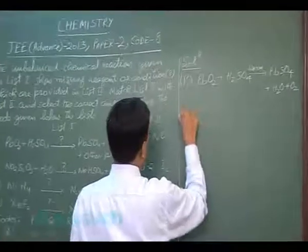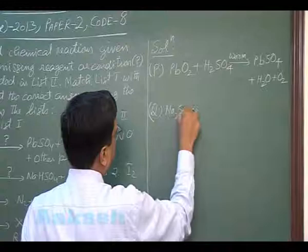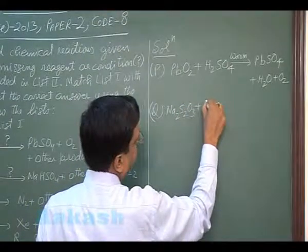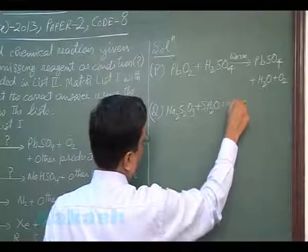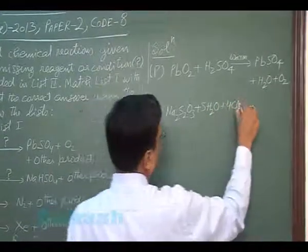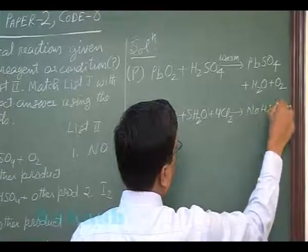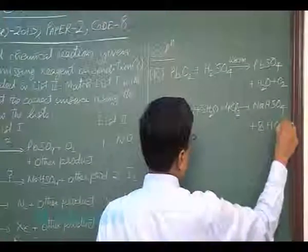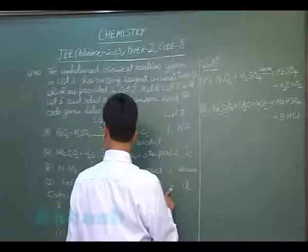Next Q: Na2S2O3 plus H2O plus Chlorine gives NaHSO4 plus S8Cl. So Q matches with Chlorine, 4.